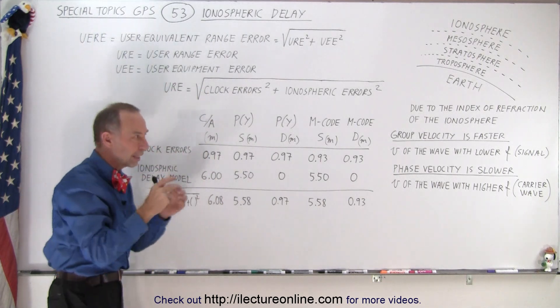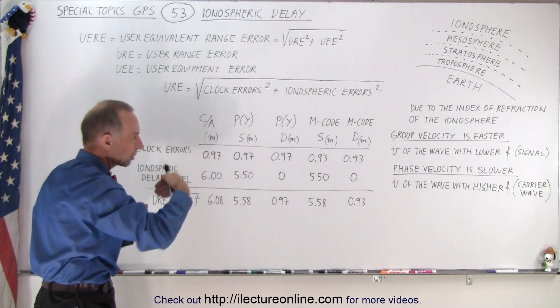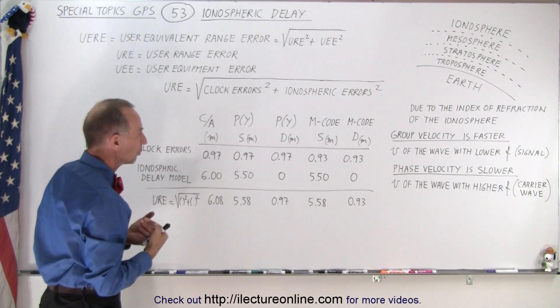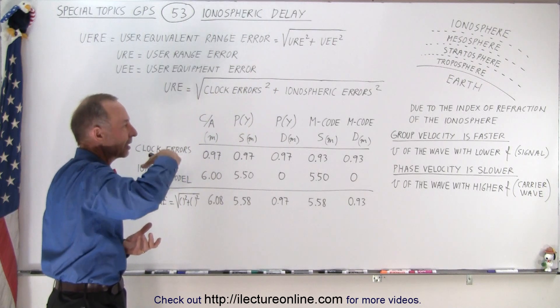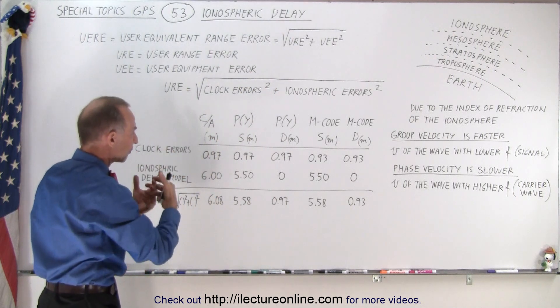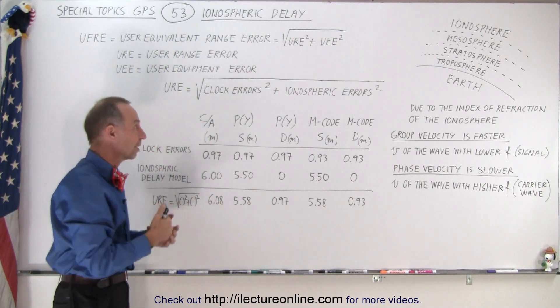UEE is equal to the User Equipment Error, which is the Equipment Error as the signal, the carrier signal, and the signal itself come into the receiver, and how that is being handled, both at the sending at the satellite, and at the receiver end of the reception of the signal.